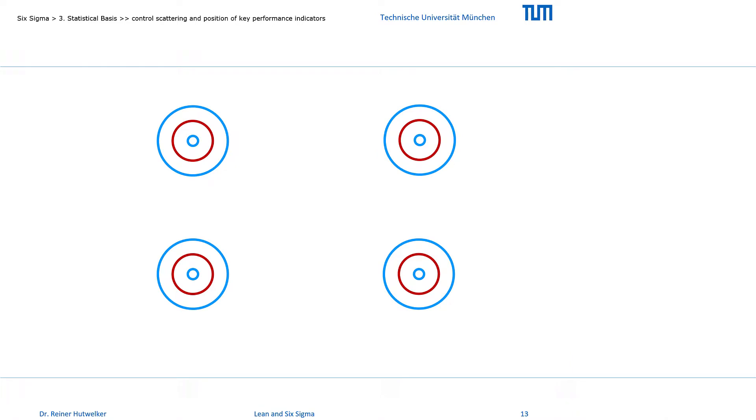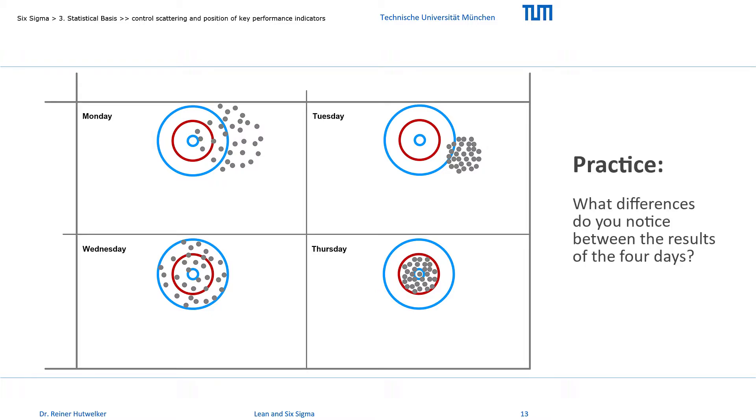Let's apply this idea to our bakery. Imagine, we baked cookies on 4 days: Monday, Tuesday, Wednesday and Thursday. We have measured the weight and diameter of the cookies, and mapped the weight on the horizontal, and the diameter on the vertical axis. We have also drawn a target, and promise our customer, that weight and diameter will be within the second ring of the target, representing our specification limits. What differences do you notice between the results of the 4 days?